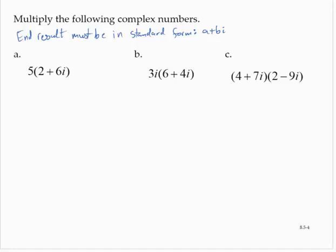So, for example, here in exercise a, I have 5 times 2 plus 6i. Just applying the distributive property, that's 10 plus 30i. And that's it. That's all we have to do.